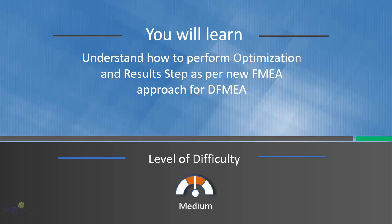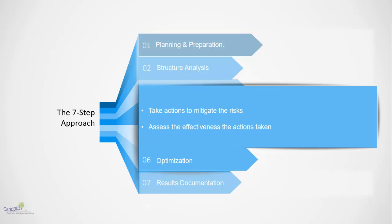In this lecture, we will talk about the last two phases of the new FMEA format, which is optimization and results step. As we mentioned earlier, the optimization step is meant to take actions to mitigate the risk. The action items are assigned in this stage, while the action priority ratings are done in the previous stage. Subsequently, the follow-up of the actions to assess the effectiveness of the results on ground is done in this phase.